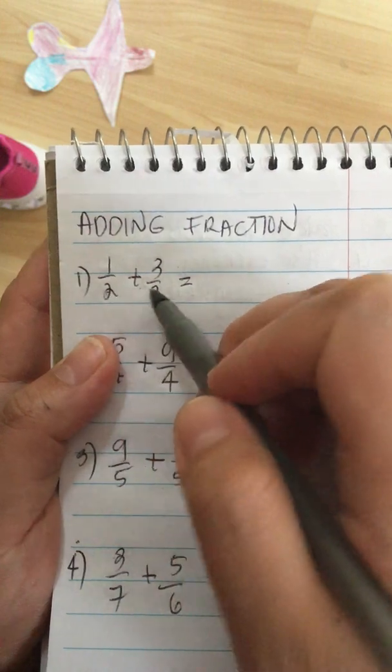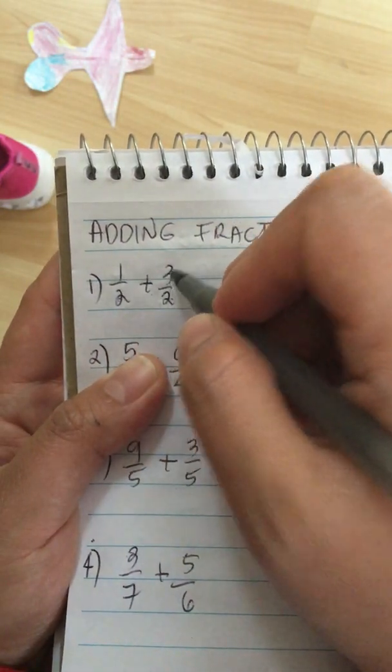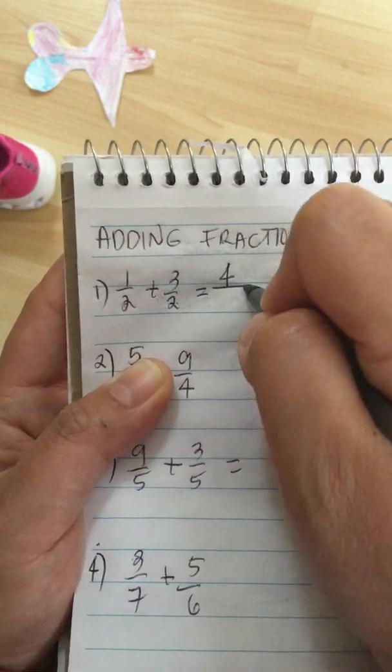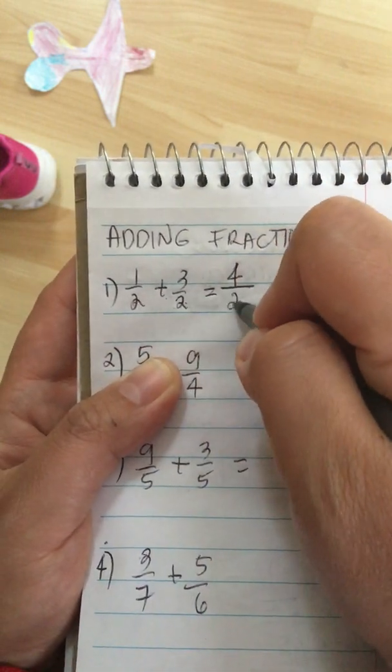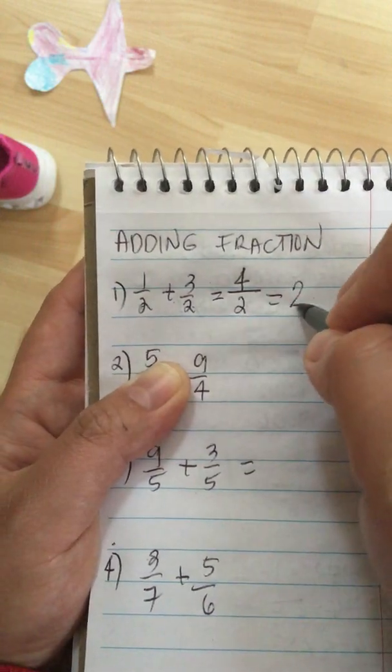We have 1 half plus 3 half. So 1 plus 3 is equal to 4. The denominator doesn't change, it's still 2. So we have 4 divided by 2 is equal to 2.